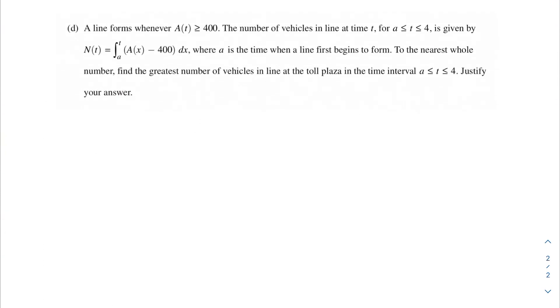Next question: A line forms whenever A(t) is greater than or equal to 400. The number of vehicles in line at time t for a is less than or equal to t is less than or equal to 4 is given by this equation where a is the time when a line first begins to form. To the nearest whole number, find the greatest number of vehicles in line at the toll plaza in the time interval that was previously mentioned. Justify your answer. What this sounds like we want to do is use the candidates test.